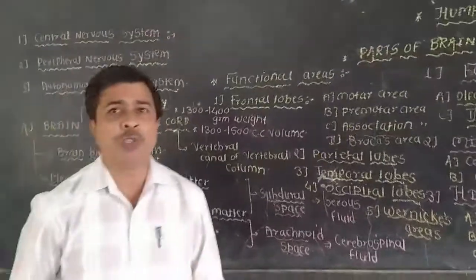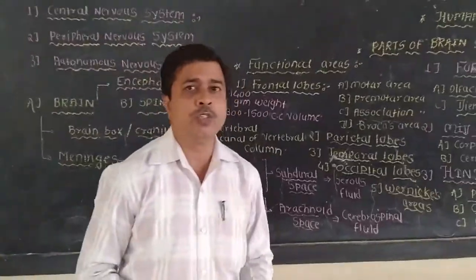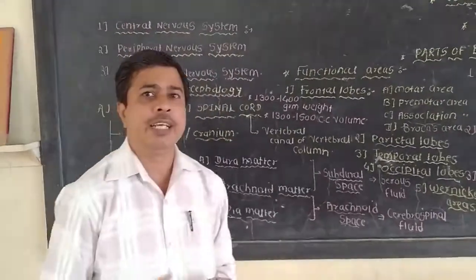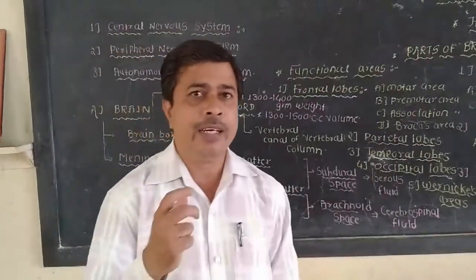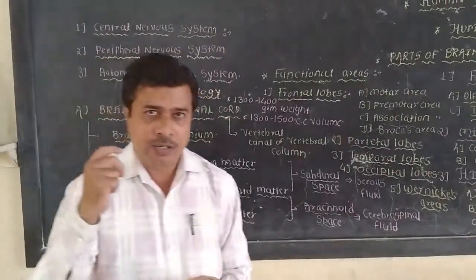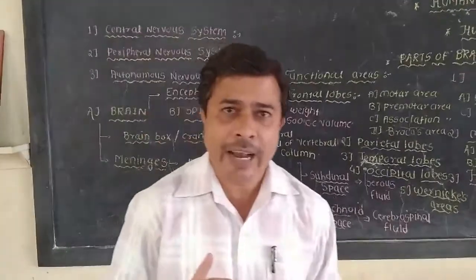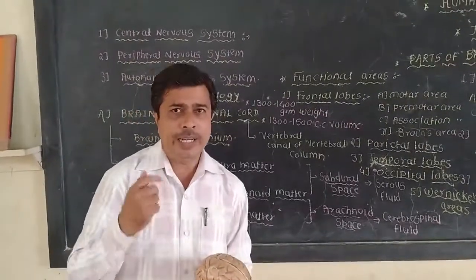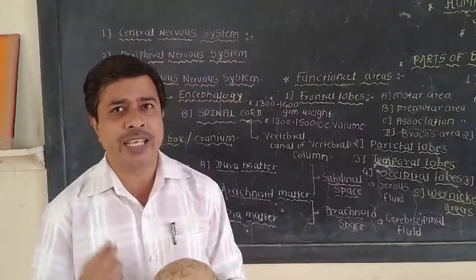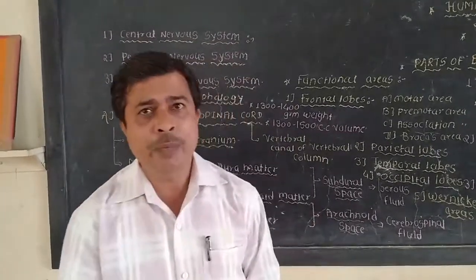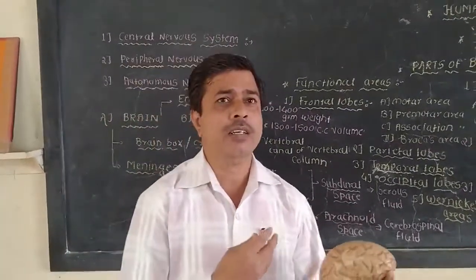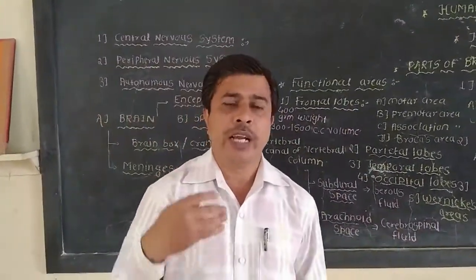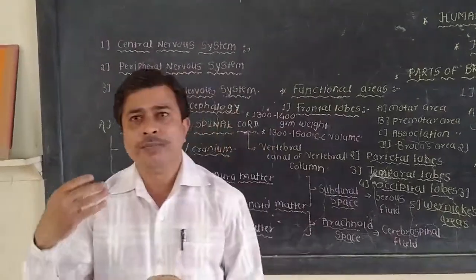The cerebrospinal fluid has a volume of about 300 to 400 cc and a specific gravity of about 1005. It contains different types of cells and is highly protective. It acts as a shock absorber and protects the brain from external injuries. It also prevents dissipation of the brain.